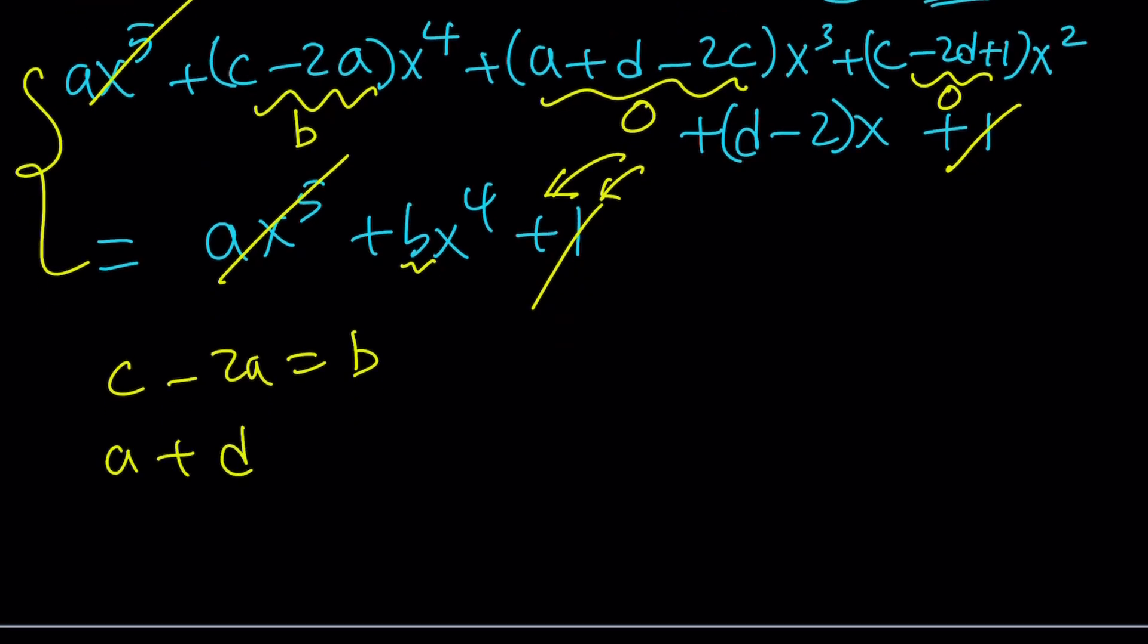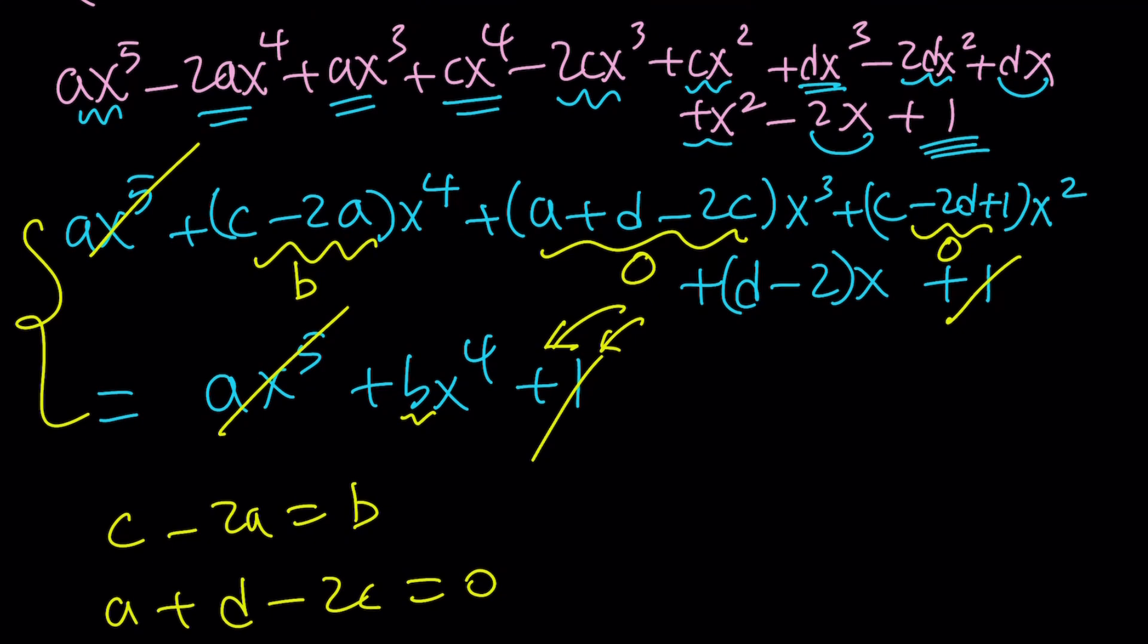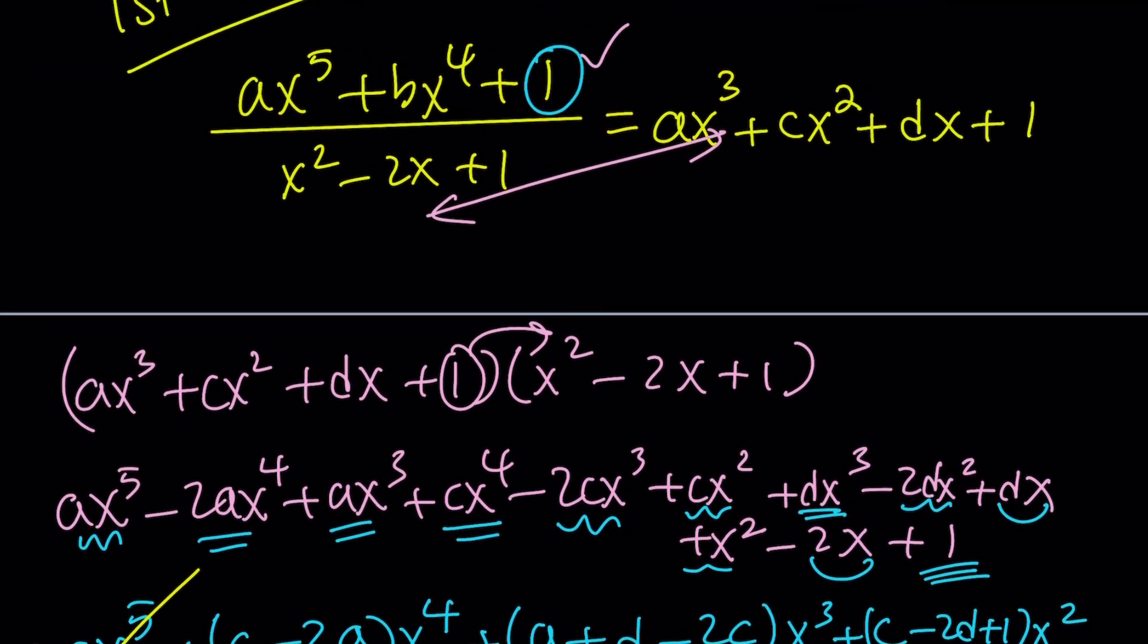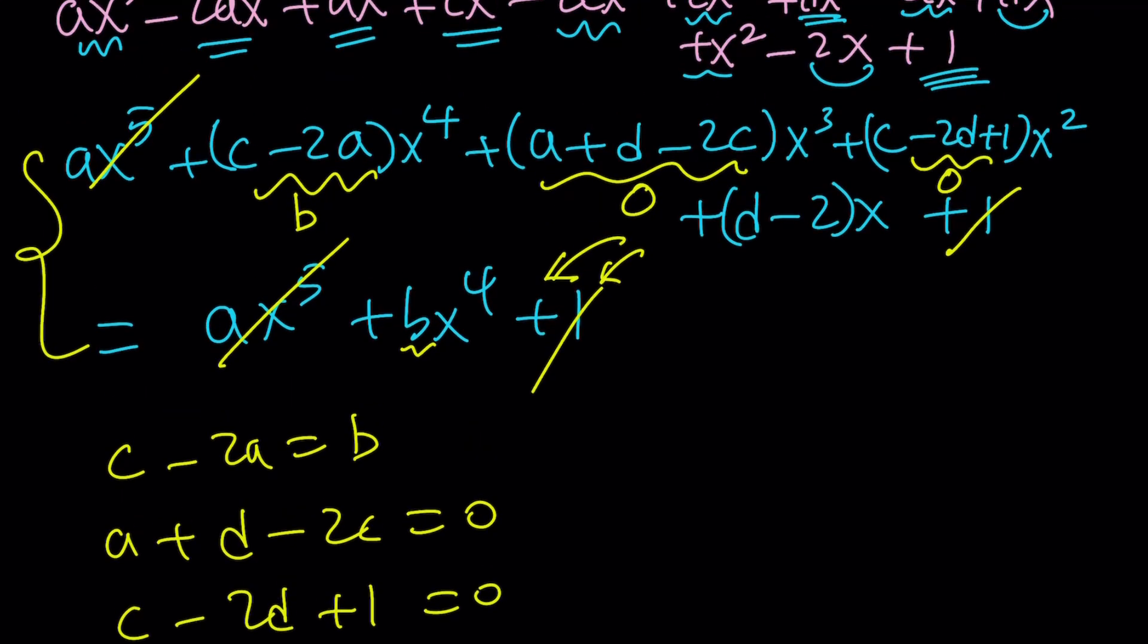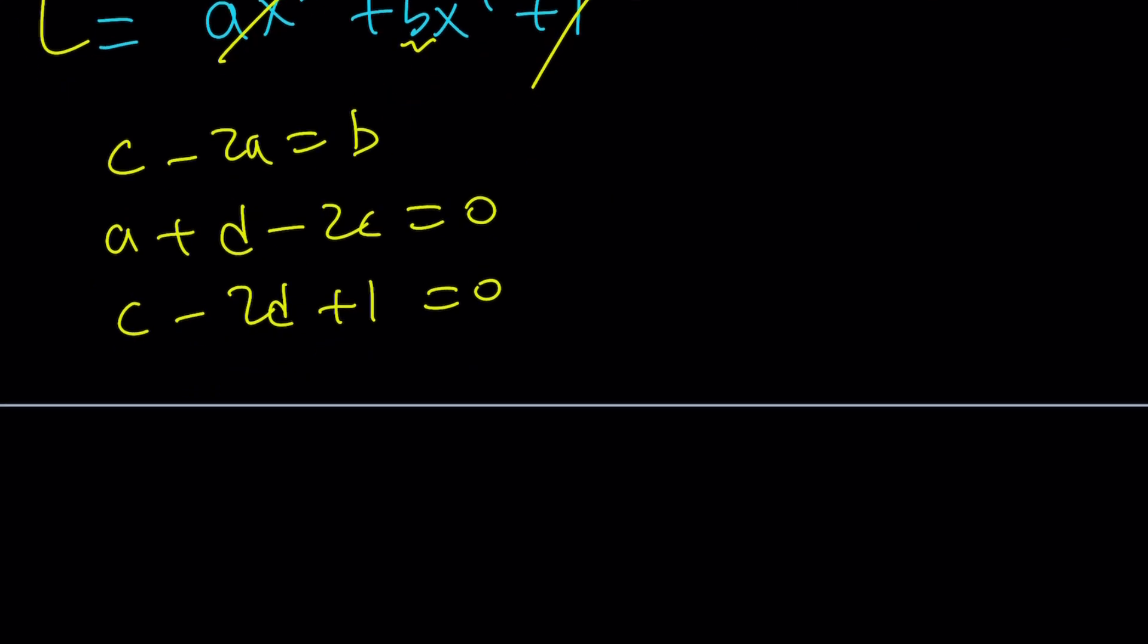a plus d minus 2c is equal to 0. And then c minus 2d plus 1 is equal to 0. Let's take a look. We have a, b, c, and d. Four variables. But three equations. So how can we find all of them from here? I think there's one thing we didn't check. Another equation. We do need four equations. The coefficient of x. There is no x term either. So d minus 2 should be 0. And that's actually really good because it gives us the value of d. And pretty much everything else collapses from there.